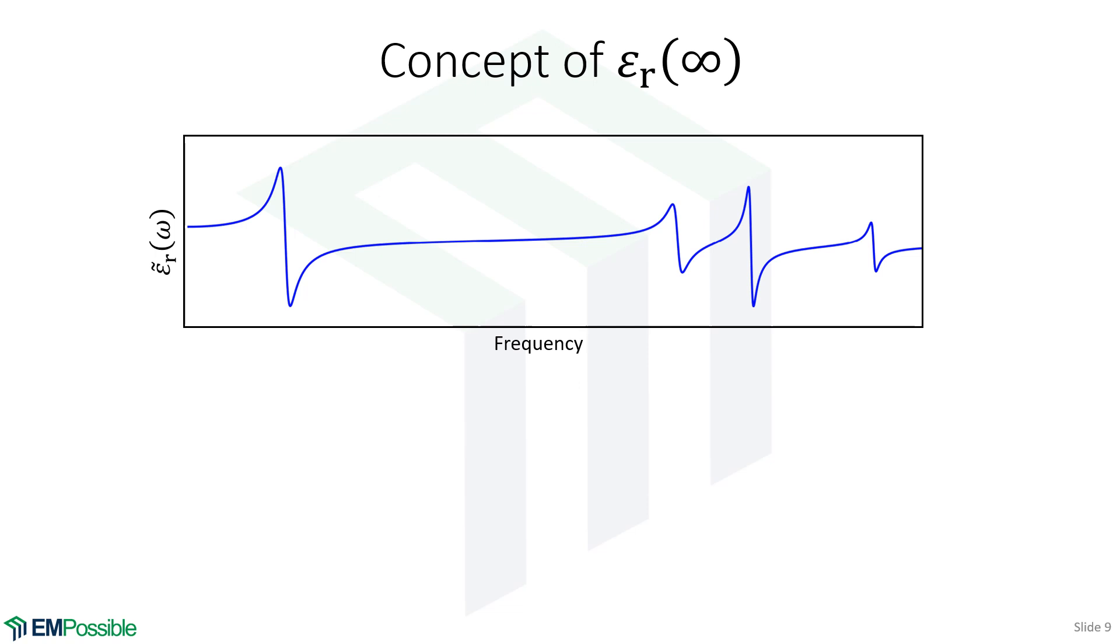Often you'll see permittivity at infinity, but we're talking about low frequency—what's happening here? Each Lorentz resonance contributes a DC offset. If we're only interested in these frequencies, why model resonances at super high frequencies? Down here, they're just contributing an offset—that's the epsilon infinity term. It represents the offset of all resonances at super high frequencies we're not interested in. That's what infinity means here.